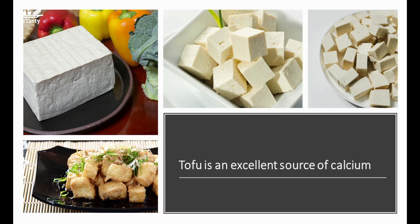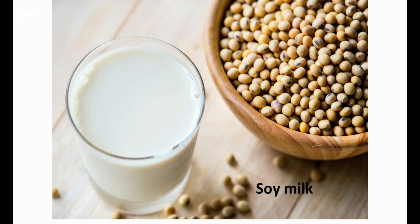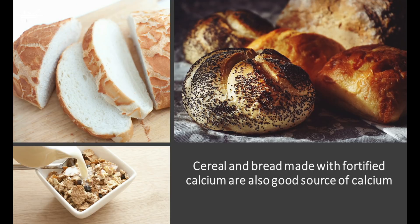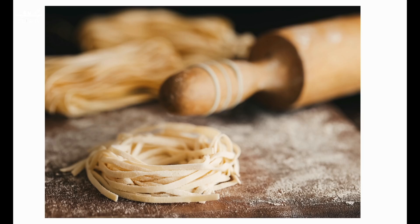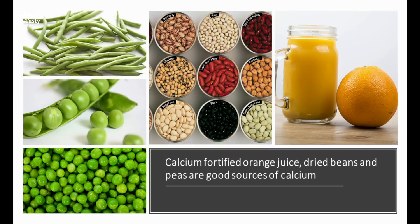Tofu made with calcium sulfate supplies significant amounts of calcium. A half cup of firm tofu can provide 25% of the calcium RDA. Soy milk fortified with calcium is an excellent source of calcium; one cup of calcium-fortified soy milk provides as much calcium as an equal amount of dairy milk. Bread and anything made with fortified flour is a good source of calcium. Calcium-fortified foods such as orange juice and cereal, beans and peas, and some nuts such as almonds contain moderate amounts of calcium that can contribute to calcium intake when eaten in sufficient quantities.